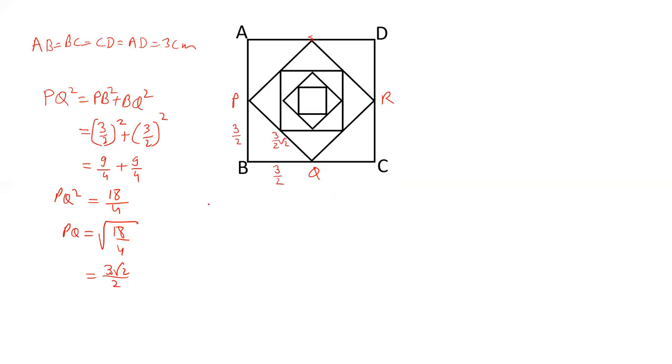Now let us calculate the area of ABCD. Area of ABCD is side square, it's AB square. AB is 3, 3 square equals 9.